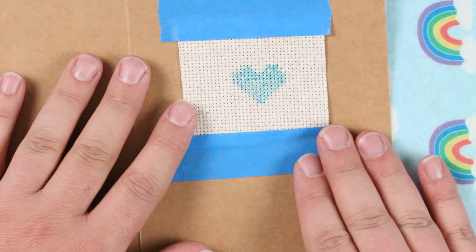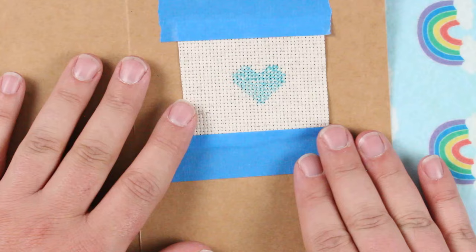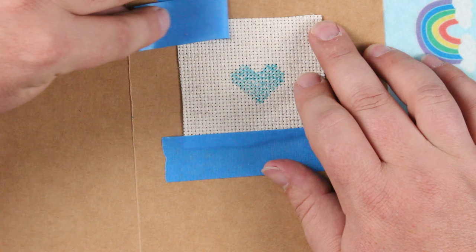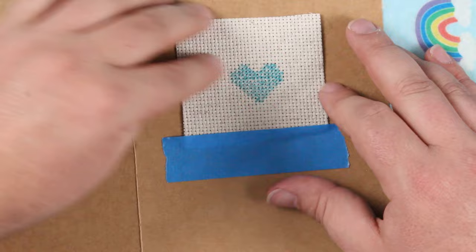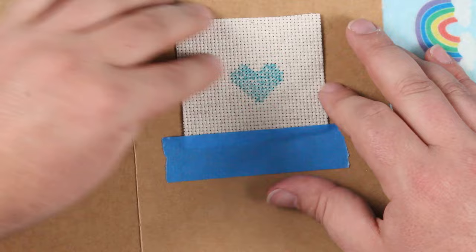So now that we've transferred our pattern onto the card, we can gently peel that tape back. Now having de-stickied it will help with this a lot. But also, if you peel it away parallel to the surface of the paper, it will reduce the odds of the tape damaging the paper. So peel it straight back like this.